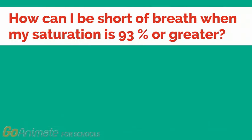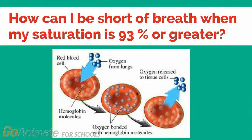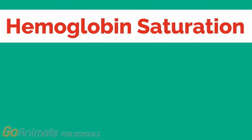We will now look at the second question: how can I be short of breath when my oxygen saturation is 93% or greater? Just before we answer this question, let's talk about what oxygen saturation means. As you may already know, one of the main components of blood is red blood cells. These cells contain a carrier protein for oxygen which is known as hemoglobin. When you take a breath, oxygen enters your body and attaches onto the carrier protein hemoglobin. Oxygen saturation level refers to the percentage of hemoglobin in the red blood cells which is carrying oxygen.